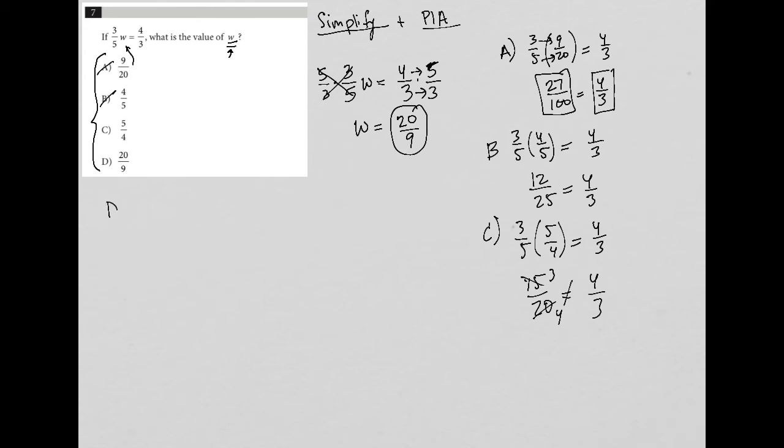And then lastly, D, which we know is the right answer based upon our simplify method. We'd have three-fifths times 20 over 9 equals four-thirds. I multiply straight across here. I know you can cross-cancel, which makes this a lot easier, but let's just multiply across in case you're not aware of how to cross-cancel.